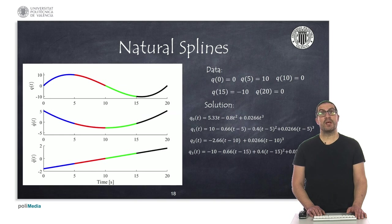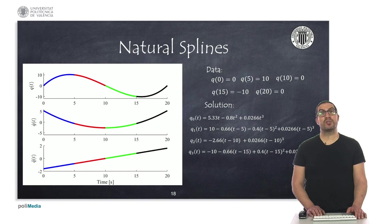Here we can see an example where the following conditions are imposed: the trajectory should pass over 10 degrees after 5 seconds, then go back to 0 degrees at the time instant 10 seconds, then to minus 10 degrees at the time instant 15 seconds, and back again to 0 degrees at the time instant 20 seconds. With all this information and the continuity conditions imposed on the cubic expressions, we can get the actual cubic expressions for the position, as shown here.